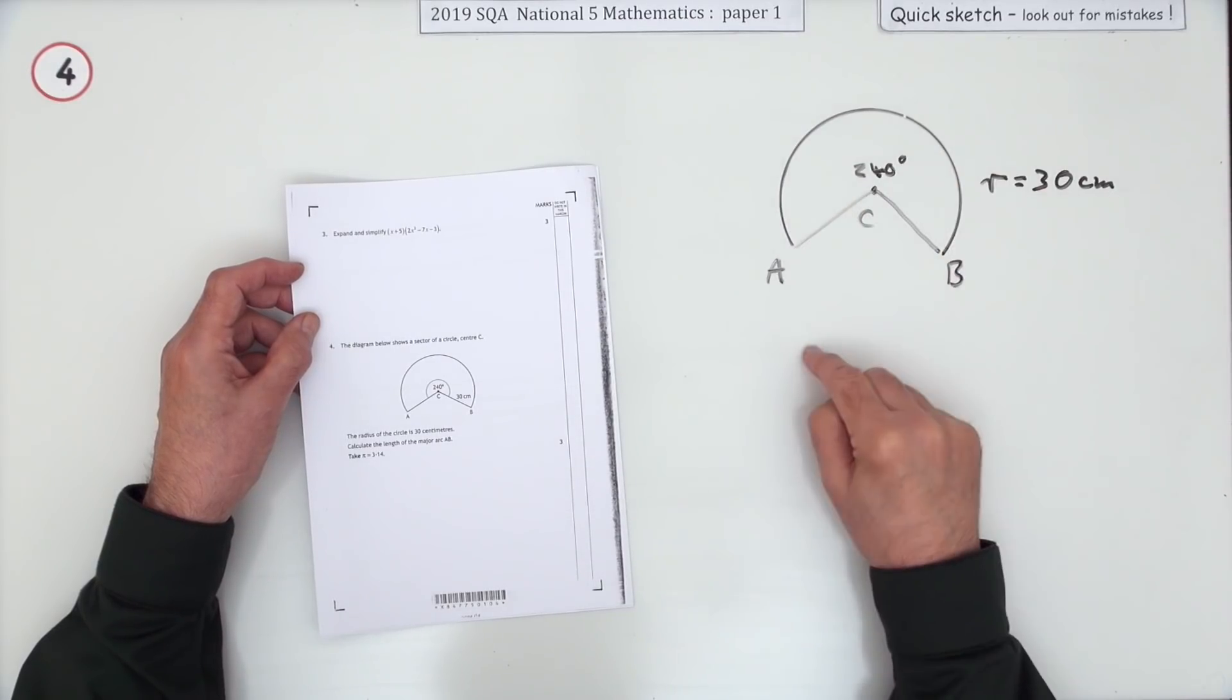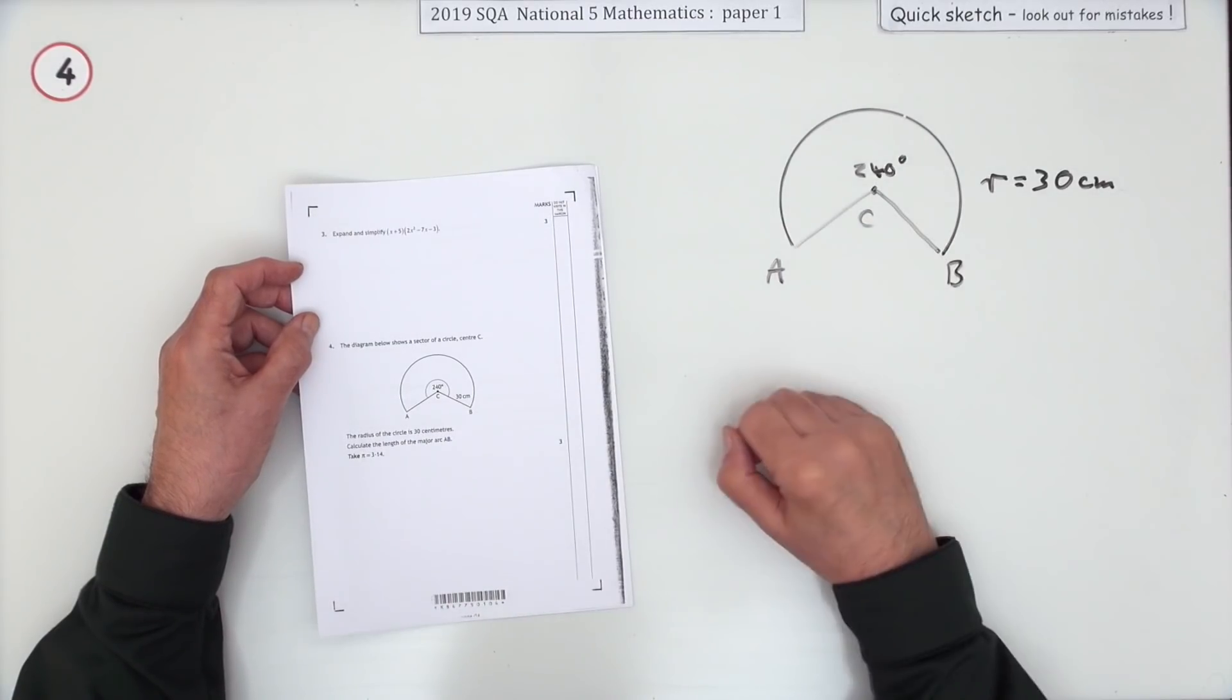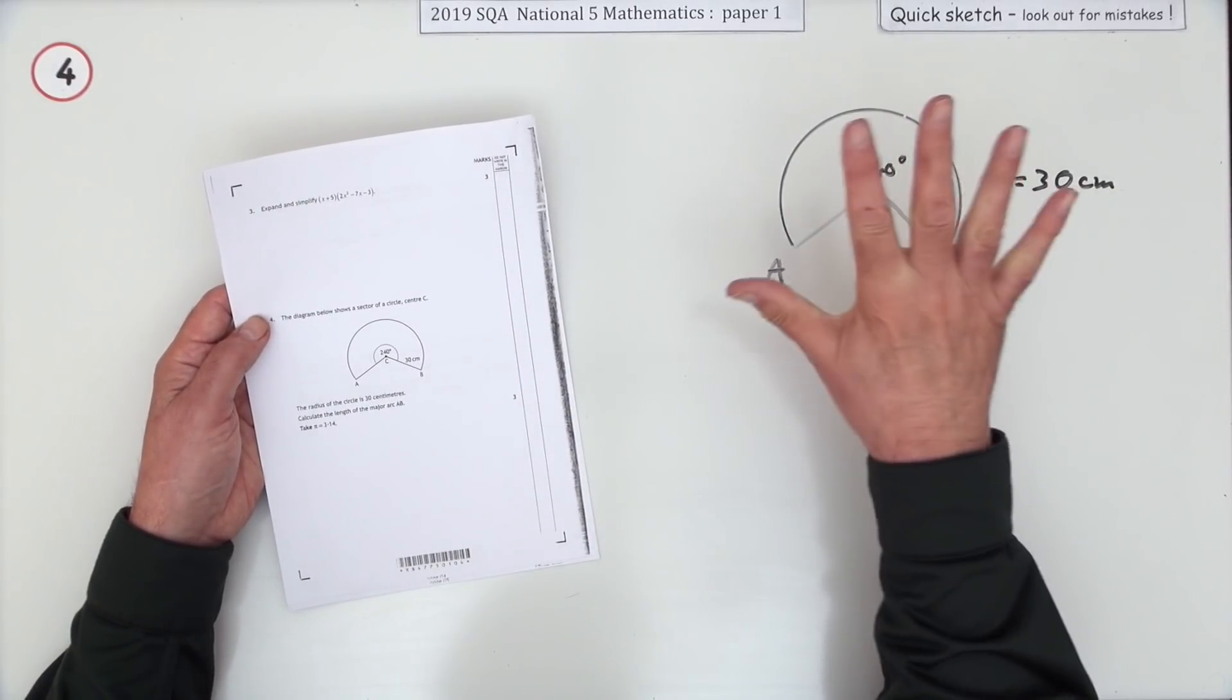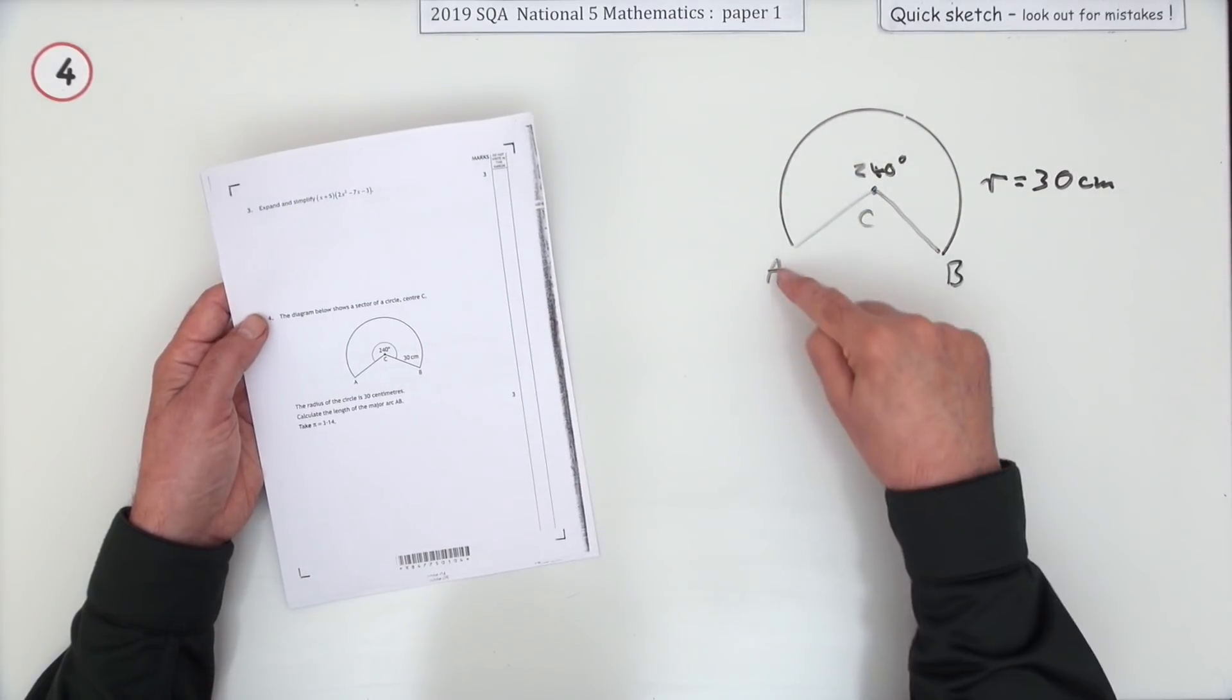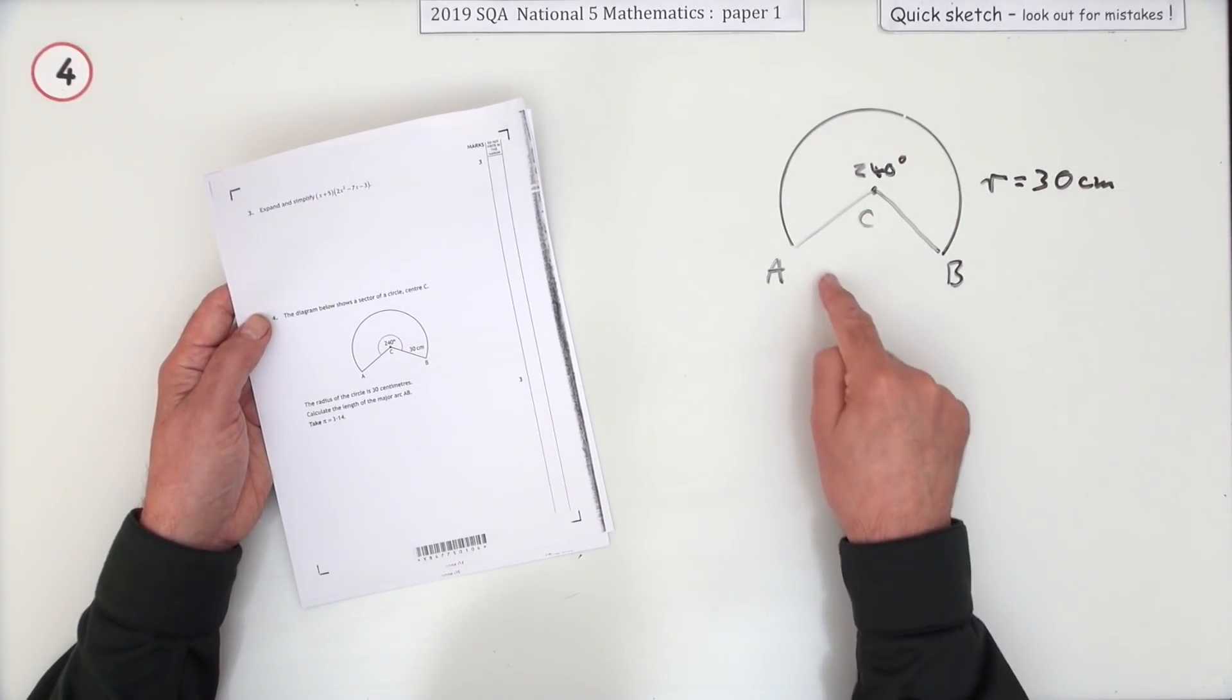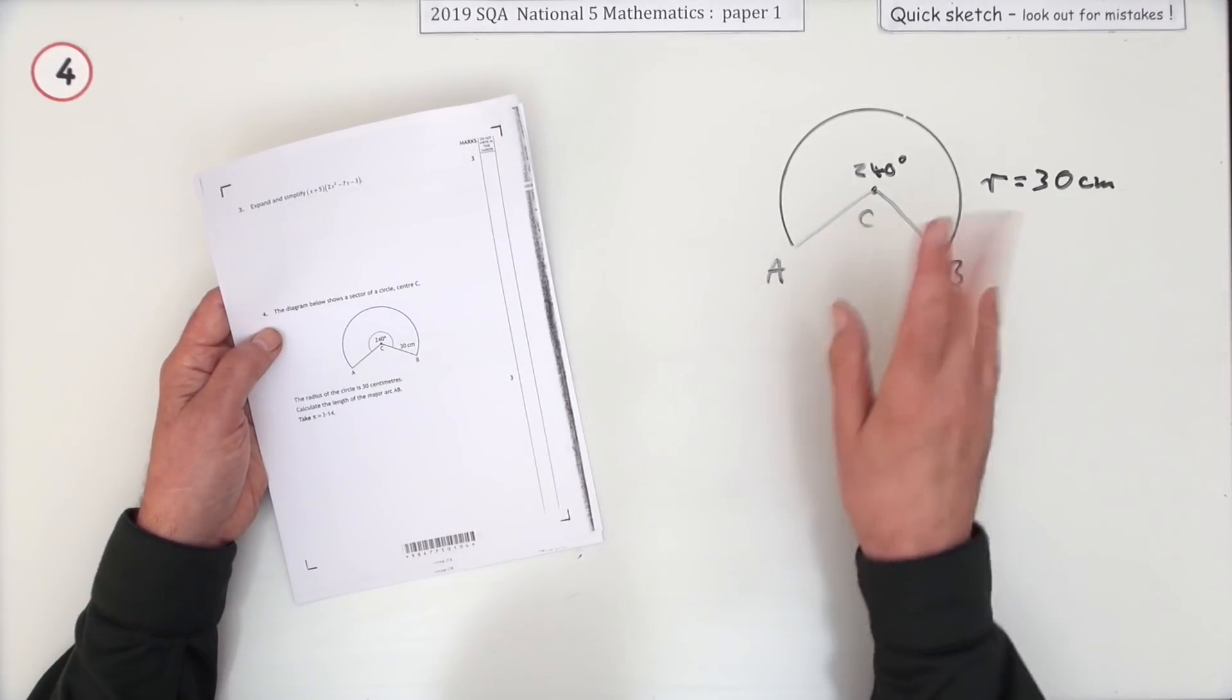All the parts are the same fraction. Whatever fraction of the angle you've got, that's the fraction of the area, that's the fraction of the circumference. It just depends which one they're asking for. You can see that you've got the angle, so you know what fraction you've got. You've got 240 out of the 360 because it's wanting it said, calculate the length of the major arc. That's the big one that you see. The little minor arc here has actually been removed in case it confuses you.